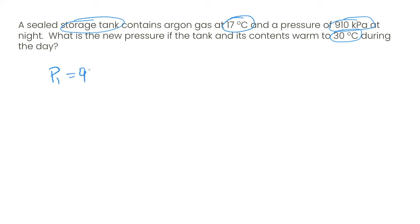we know our initial pressure is 910 kPa. We know that our initial temperature is 17 degrees Celsius, or if we add 273 to that, that's 290 K.